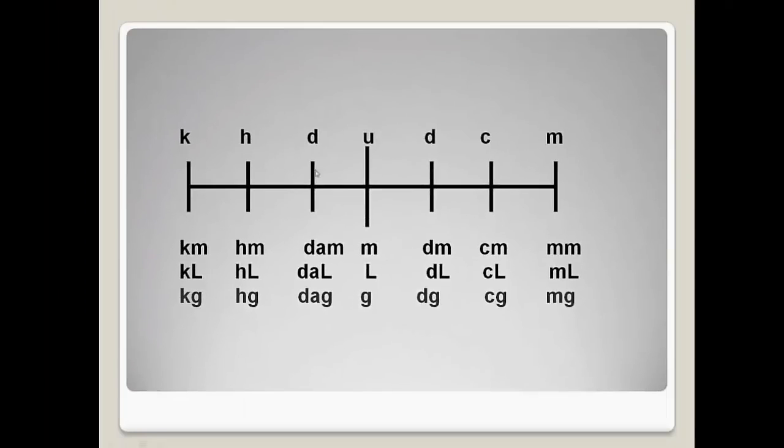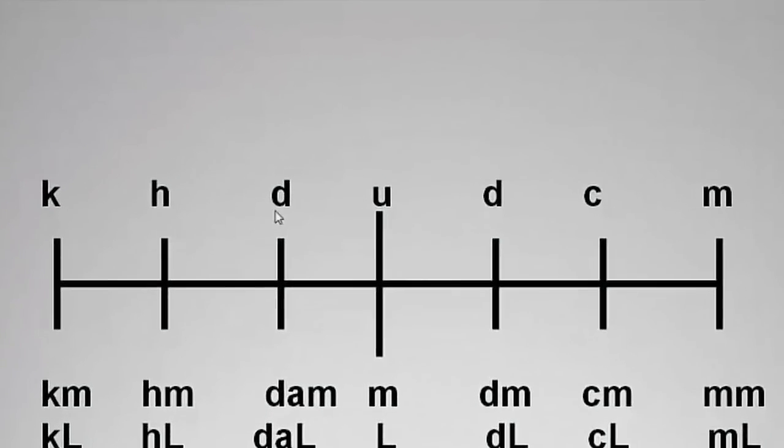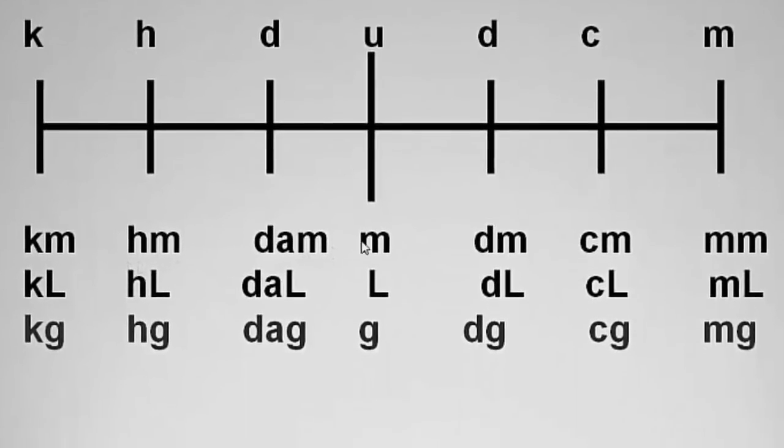So here's my metric slider: King Henry died unexpectedly drinking chocolate milk, with the meter, the liter, and the gram. Again, to put these together, Km would be kilometer. Hl would be hectoliter. Da or dkg would be decagram. Deciliter, centiliter, and milliliter.